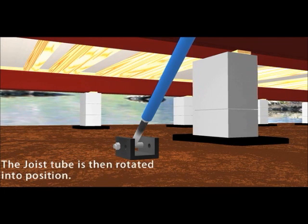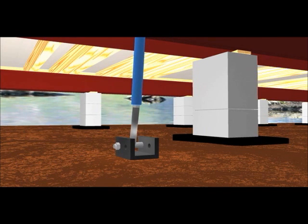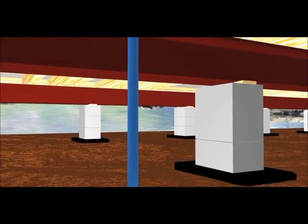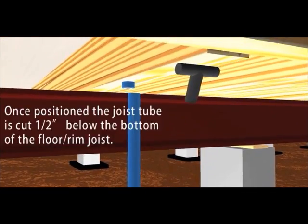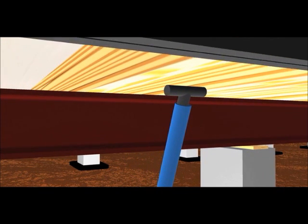The joist tube is then rotated into position. Once positioned, the joist tube is then cut a half inch below the bottom of the floor or rim joist.